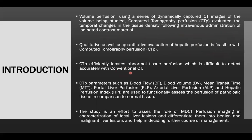CT perfusion efficiently locates abnormal tissue perfusion which is difficult to detect accurately with conventional CT. CT perfusion parameters such as blood flow, blood volume, mean transit time, total liver perfusion, arterial liver perfusion and hepatic perfusion index are used to functionally assess the perfusion of pathological tissue in comparison to normal tissue. The study aims to assess the role of MDCT perfusion imaging in the characterization and differentiation of benign and malignant focal liver lesions to help in deciding further management.